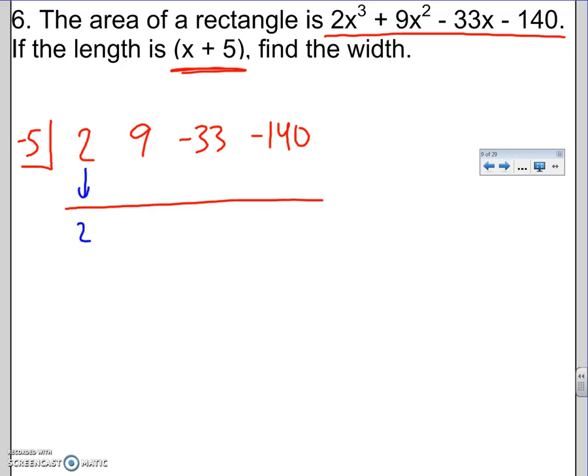Remember the pattern for synthetic division is drop the first term. You're going to multiply the number of the box. 2 times negative 5 is negative 10. You add downwards. 9 minus 10 is negative 1. Multiply the number of the box. Negative 1 times negative 5 is positive 5. Add downwards. That makes negative 28. Negative 28 times negative 5 is positive 140. Add downwards. Zero. That's good. That means there's no remainder.